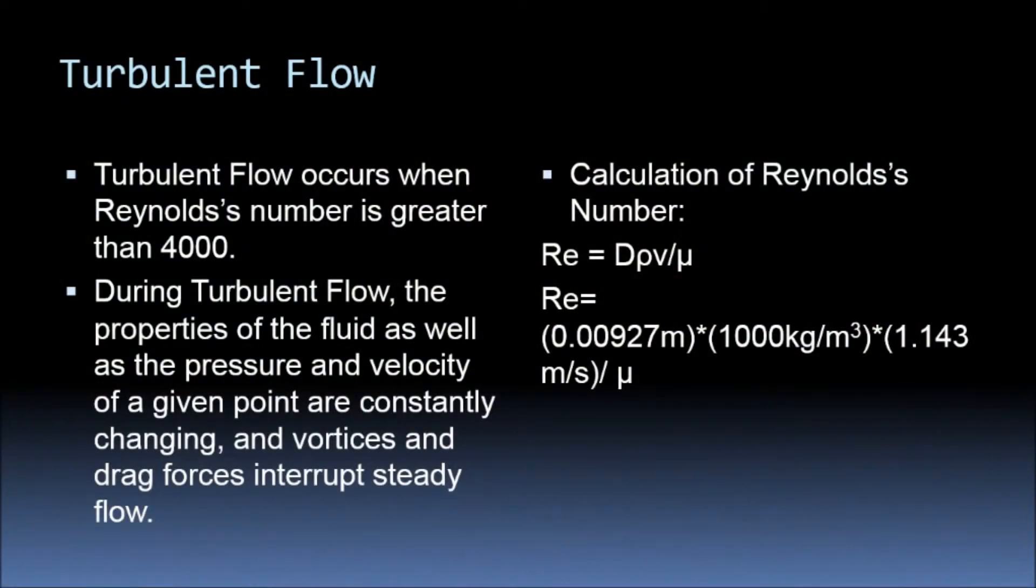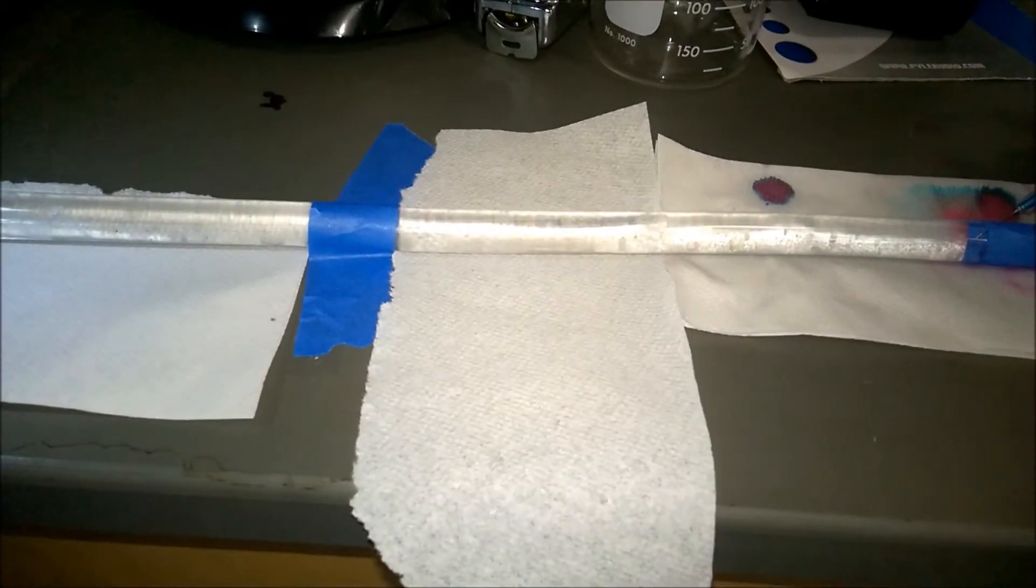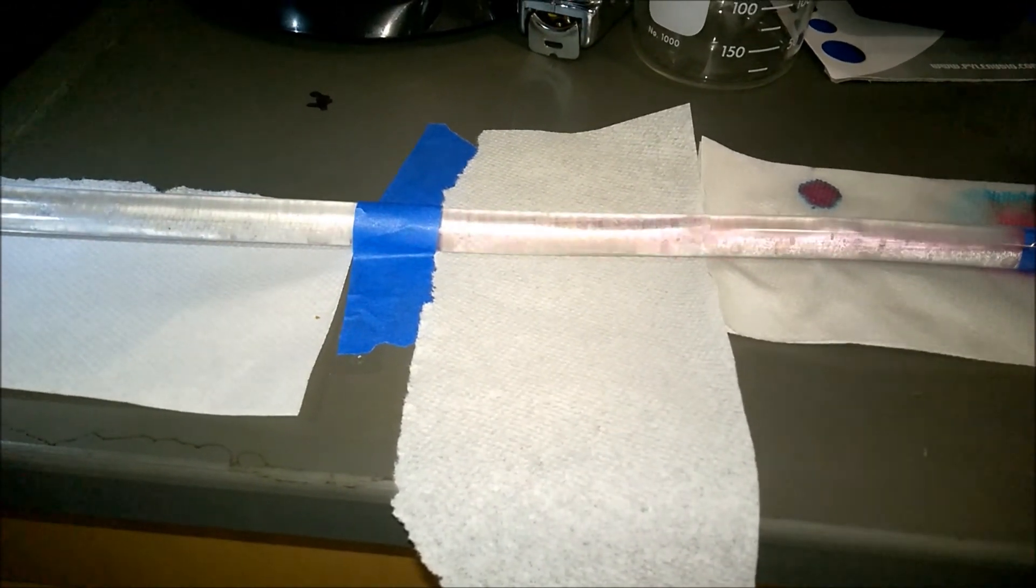When the Reynolds number is greater than 4,000, the flow is considered to be turbulent. Viscous forces dominate here, leading to lateral mixing and vortices. Here, we can see that the dye is almost instantly mixing with the surrounding water.